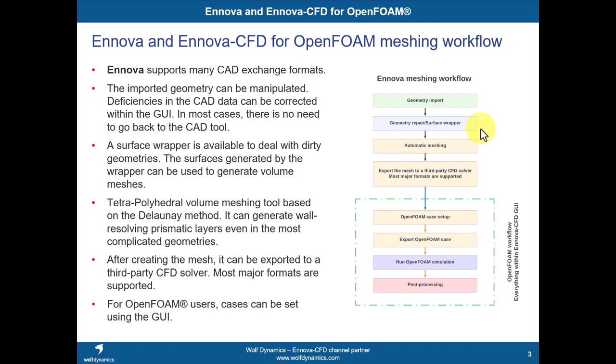After you get the geometry, you have the capability to repair it in Innova. Most of the time you can do a small fix in Innova; sometimes you need to go back to your CAD tool. You can also handle very large assemblies or dirty geometries — what we can call fault-tolerant meshing. You can do that in Innova using a surface wrapper to get a fault-tolerant mesh, saving the time you'd otherwise invest in cleaning the geometry.